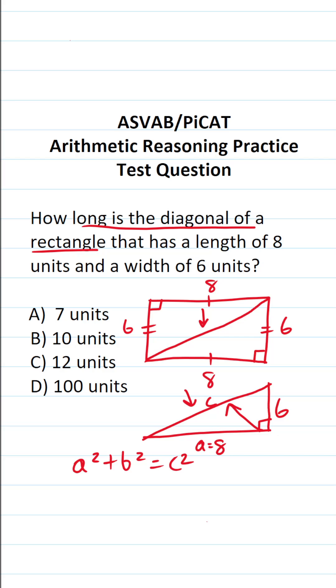We'll let A be eight and B be six. So this becomes eight squared plus six squared equals C squared. Eight squared is eight times eight or 64. Six squared is six times six or 36 equals C squared.